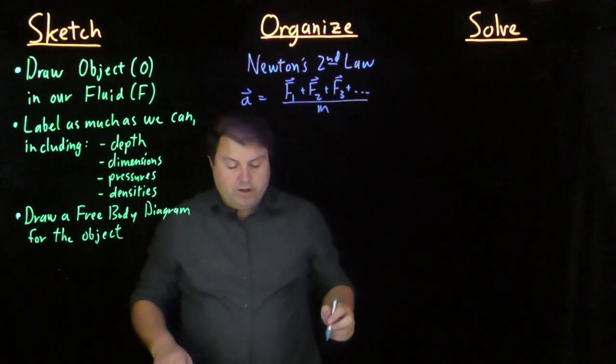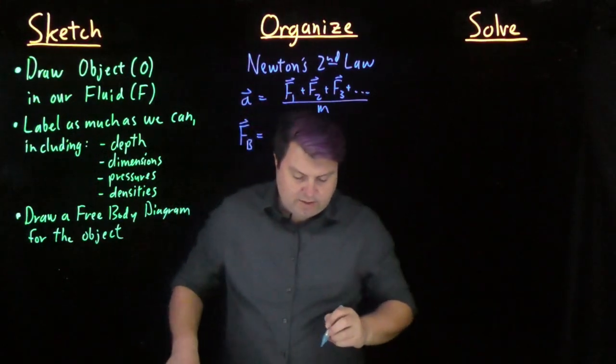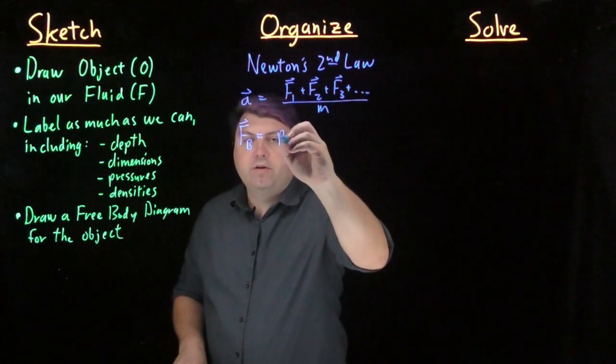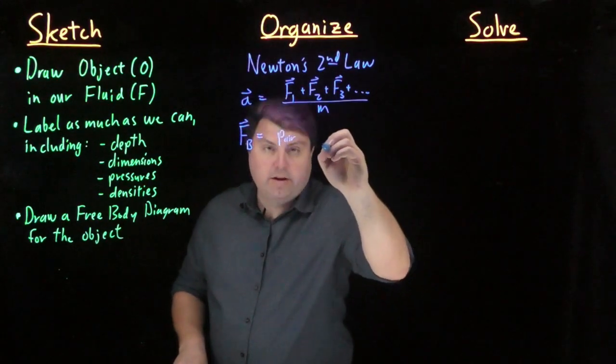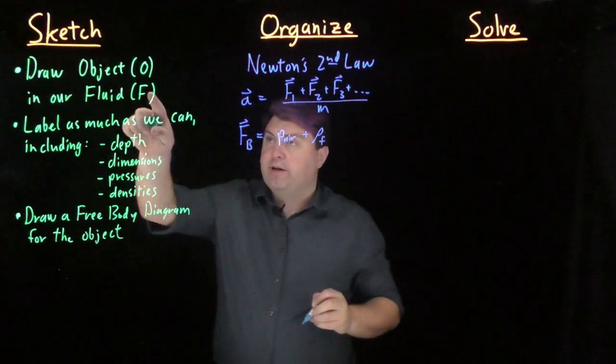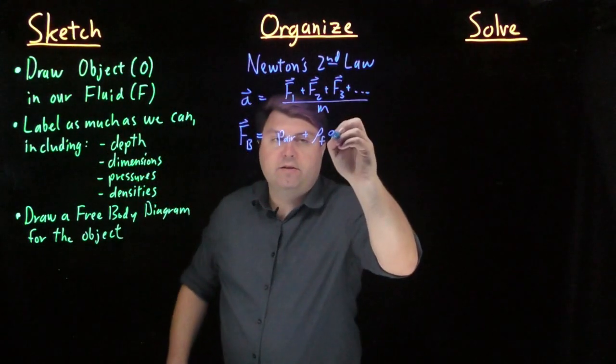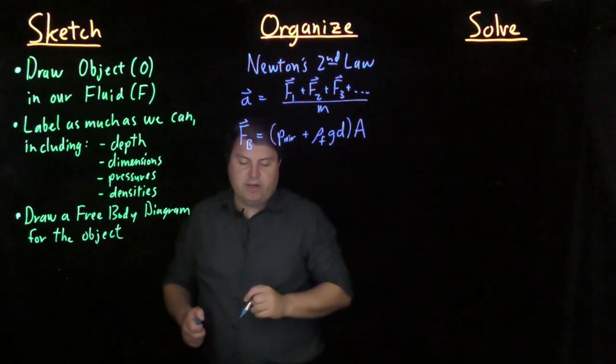So just a reminder for this, that our force of buoyancy is equal to the pressure of air plus the density of the fluid F times G times D, all times the area.